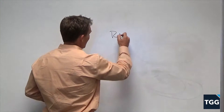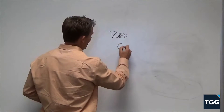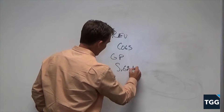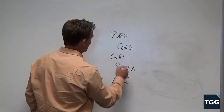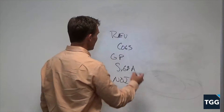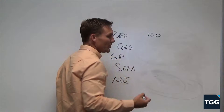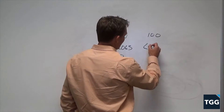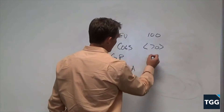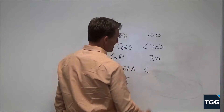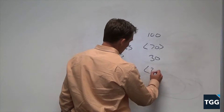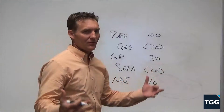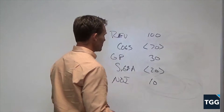If we take a simple business and we say we've got revenue, cost of goods sold, gross profit, SG&A, net operating income — revenue is at 100. A typical manufacturing business: let's say they've got 70 in their cost of goods sold, which means their gross profit is now 30. And in their SG&A, they've got roughly 20, which means their net operating income is now 10. Very simple, everyday sort of manufacturing type business.